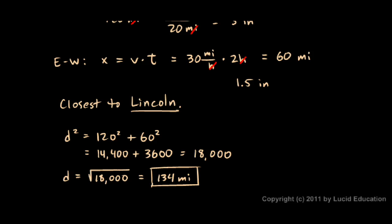So after 2 hours, the airplane is closer to Lincoln than to any other town. We just see that on the map. And it's 134 miles from its starting point over Redding, which we find with the Pythagorean theorem.